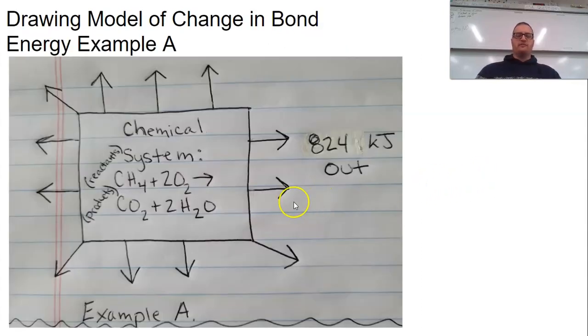So we first have a simple drawing model. We have our chemical system, our reactants labeled and our products labeled. Given the chemical equation. And then we see that energy is being given out because it's being released from the system. So it goes from the system to the surroundings. Energy is being transferred and therefore we're producing energy here.